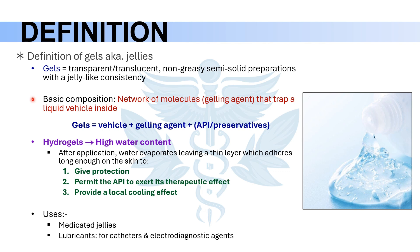When we look at the basic composition of a gel, we will see that they are composed of a network of molecules, usually a polymer, that traps a liquid vehicle inside. More specifically, gels are made of a gelling agent which traps water inside if our vehicle is water, and to the water we can incorporate any active constituent if we are preparing medicated gels.